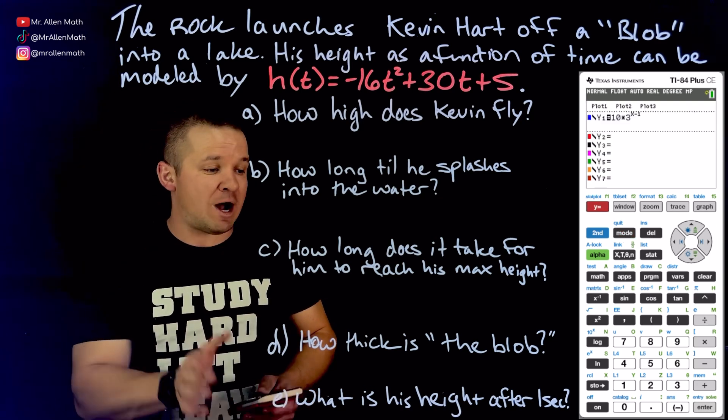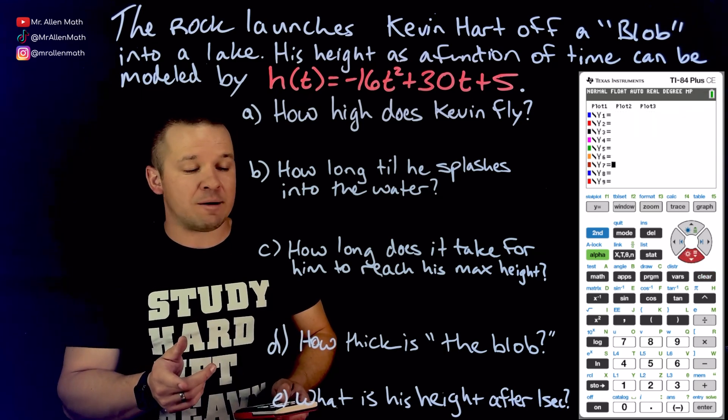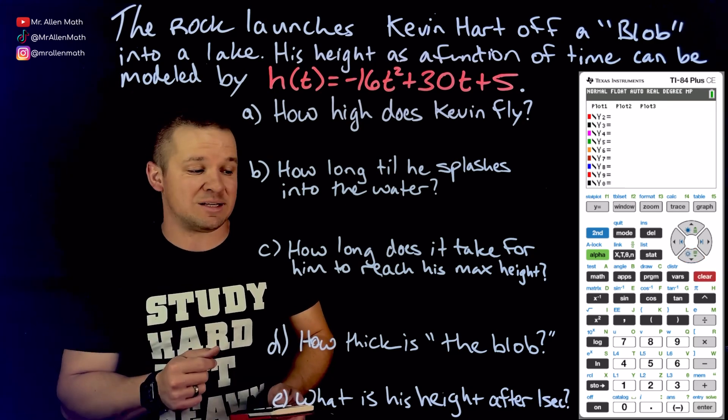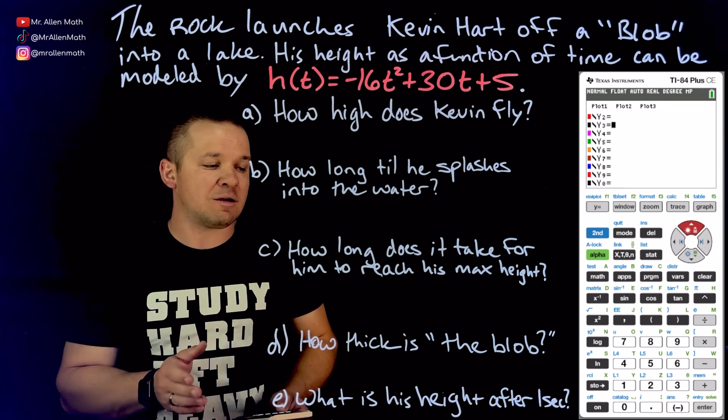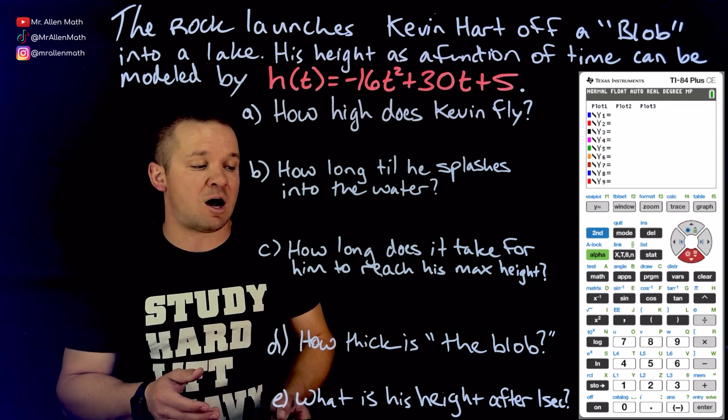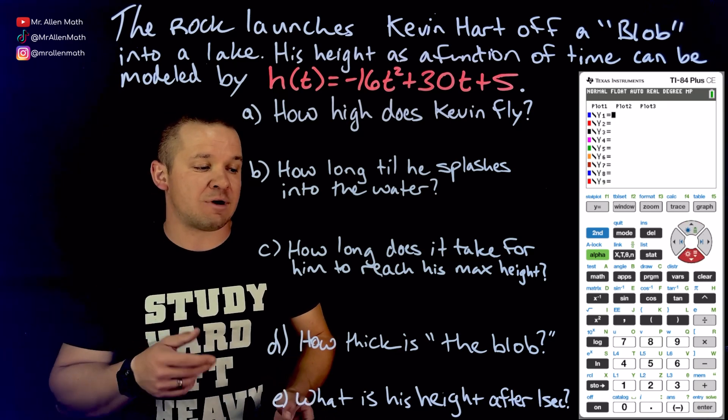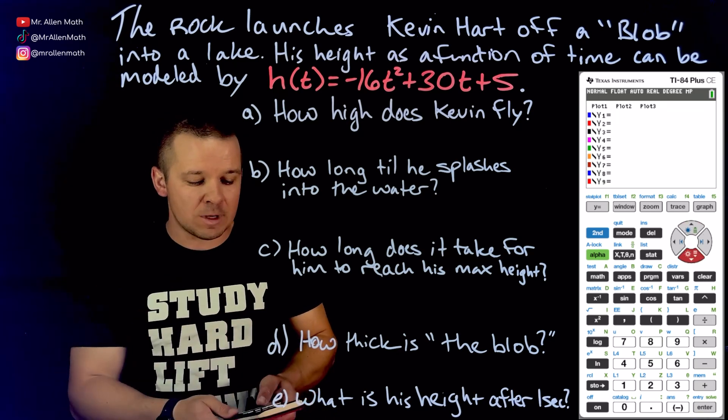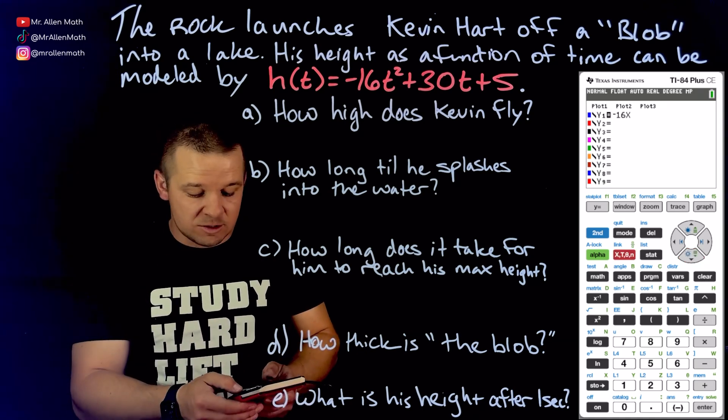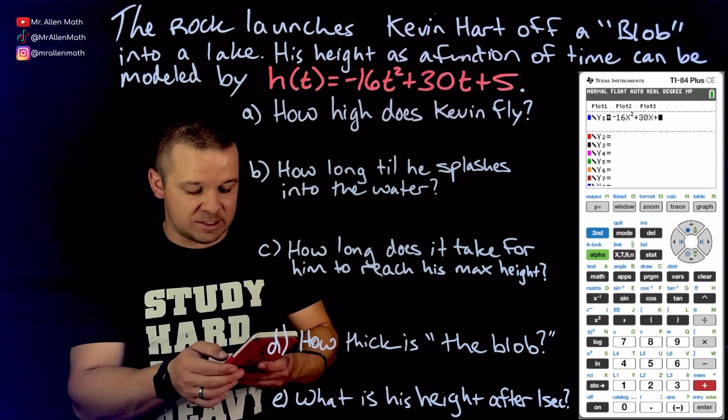So first thing I'm going to do is hit y equals and I'm going to clear out whatever is in there. Now, I'm going to arrow all the way down to the bottom here and I suggest you do the same because if you have anything in here, like a little negative sign, it's going to mess things up. So if there's anything in there, clear it out. If any of your plots are on up here, make sure that you turn those off. I'm going to type this in, negative 16, and we're just going to use x in our calculator here. Squared, that's over on the left-hand side, plus 30x plus 5.